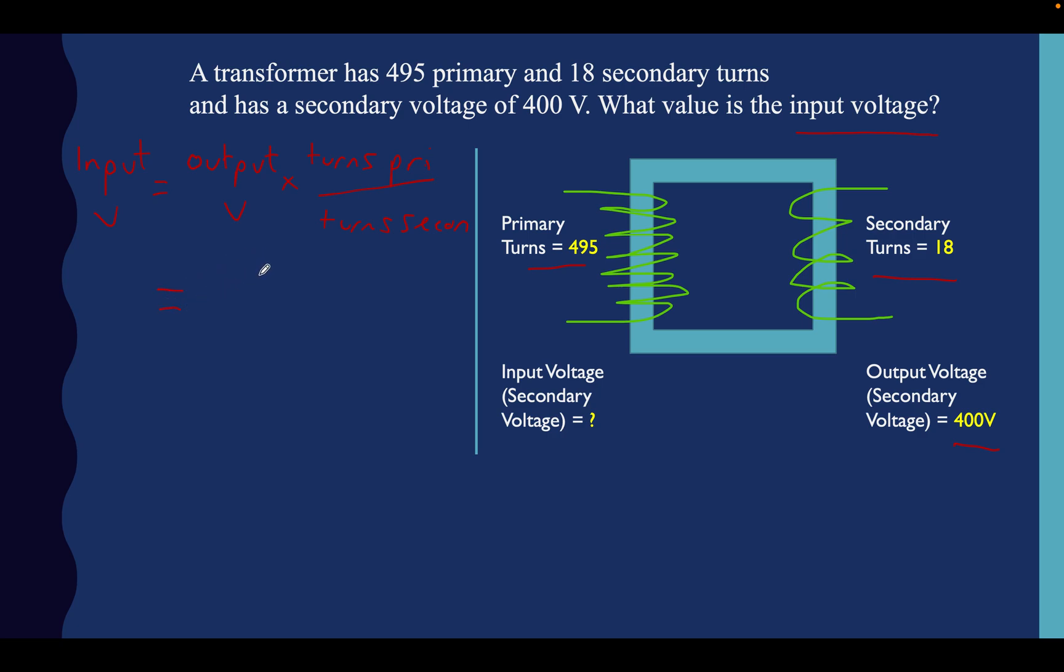So let's do that below here now. First of all, let's do turns on primary, turns on secondary, and multiply it by 400. So we're going to have 400 volts because that's our output voltage there. And we're going to multiply it by 495, which is our primary turns on the top line, divide it by 18, which is our secondary turns on this side.